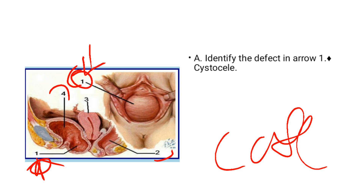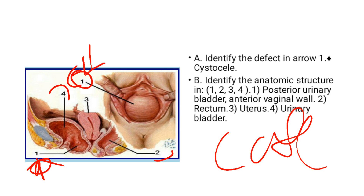Why have we identified it as the blood from the bladder? We need to go through this question for you to understand why. So, identify the anatomical structures in 1, 2, 3, and 4. One, this one here, as you can see, that's the posterior unit — bladder. And that's why on the first one, we said this is a cystocele, because the anterior bladder is one, which is visible on the anterior vagina. So that's why it became a cystocele.